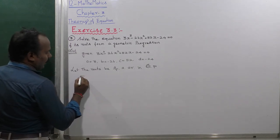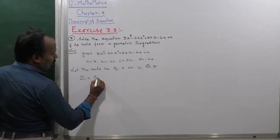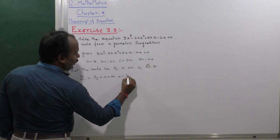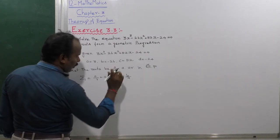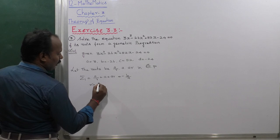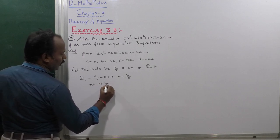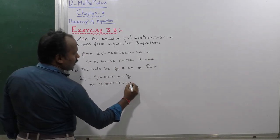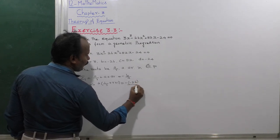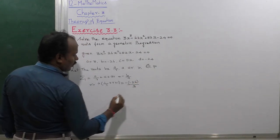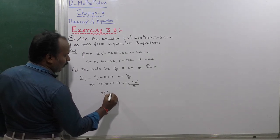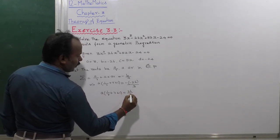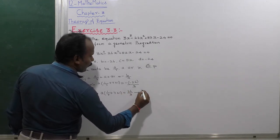First, find the value of summation 1: A by R plus A plus A·R equals minus B by A. That is the Vieta's formula part, which implies A is a common value. So A times (1 by R plus R plus 1) equals minus B by A, that is 26 divided by 3. This is equation number 1.